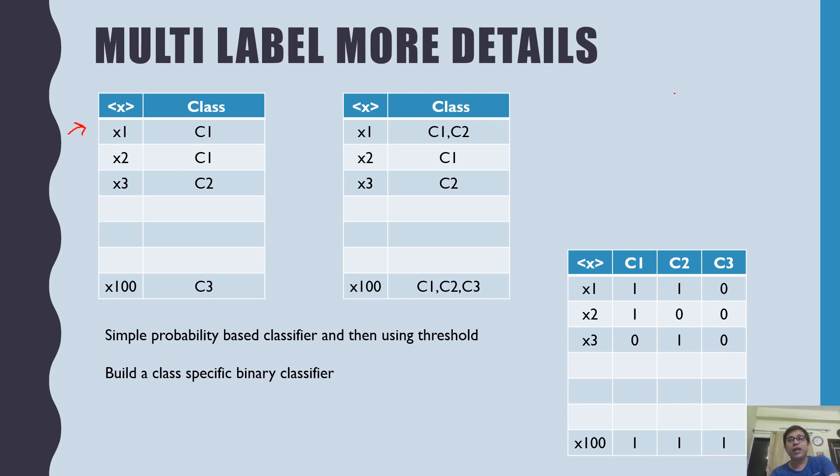Each corresponds to one of the classes, and wherever a particular instance belongs to a class, we have put the value one over there. If it doesn't belong to that class, we have put it as zero. X100 belongs to all of C1, C2, C3, so you see it is one, one, one for each one. Again, X3 belongs only to C2, so we have only put this one as one. Then it turns out that we can treat them separately as separate target variables and build classifiers.